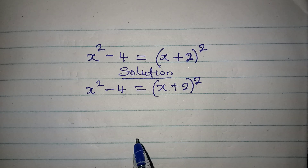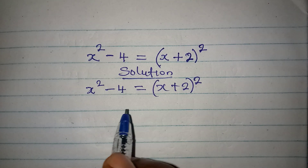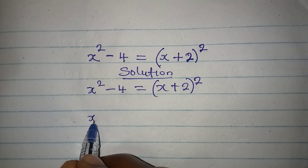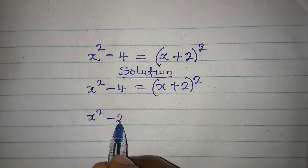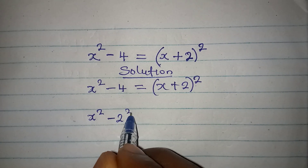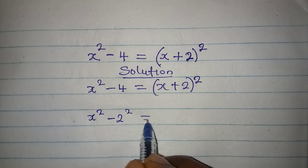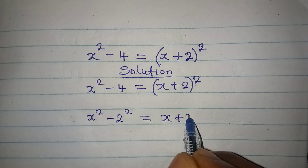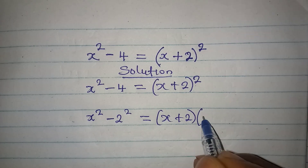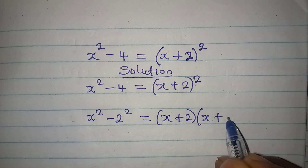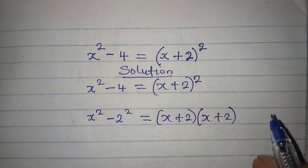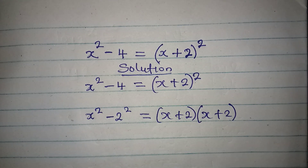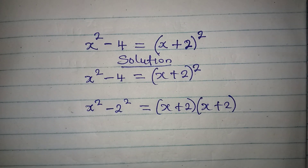Now, do you know that this is the same thing as x squared minus 2 squared equals x plus 2 and x plus 2? So this means that we have x plus 2 in two places.